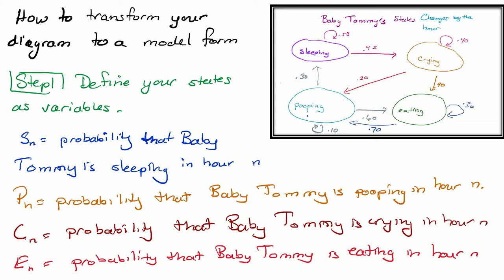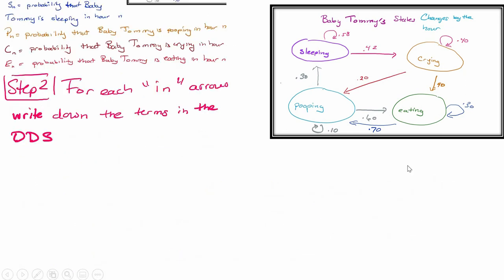Cn is the probability that baby Tommy is crying in hour n, and En is the probability that baby Tommy is eating in hour n. So those are my variables that have now taken these pods and put them into something I can get my hands on. The next step is to take those variables and write down a recursion formula. There is one because I'm transitioning from one state to another based on where I am in the previous state.